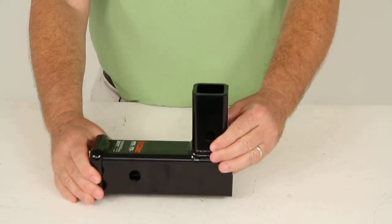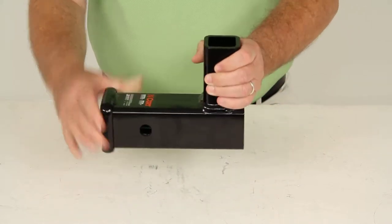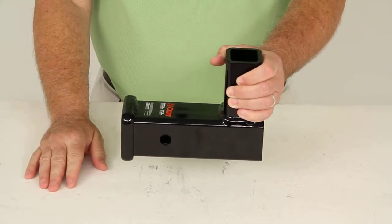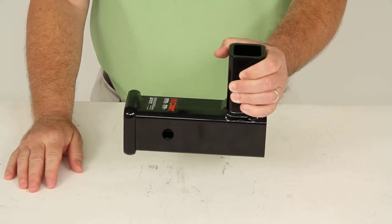What this adapter does is slide up into that vertical hitch and then extend out to give you the horizontal hitch receiver opening that you need.